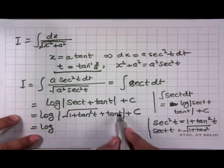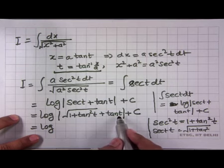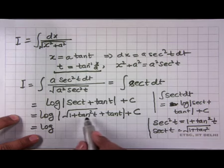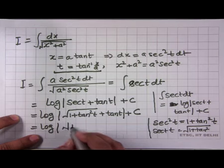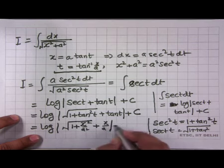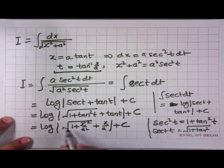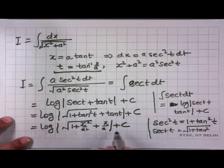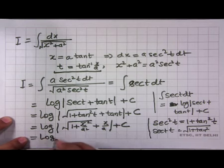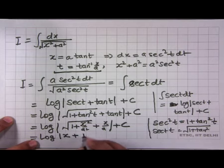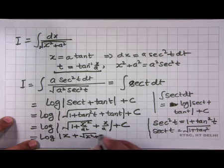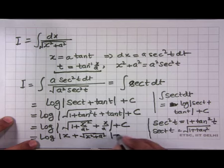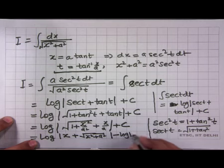Since t = tan⁻¹(x/a), tan(t) = x/a. Substituting, we get √(1+(x/a)²) + x/a = √(a²+x²)/a + x/a. After simplification, this becomes log|(√(a²+x²) + x)/a| + C, which equals log|x+√(x²+a²)| − log|a| + C.